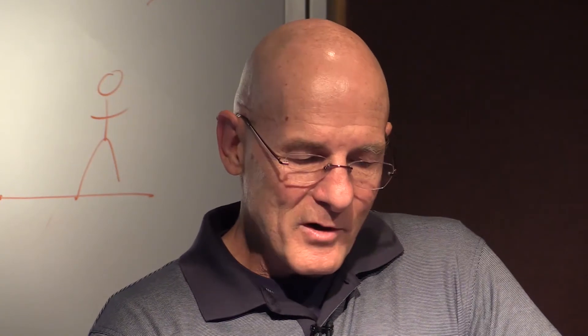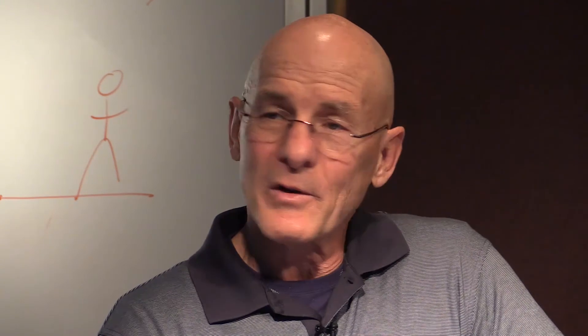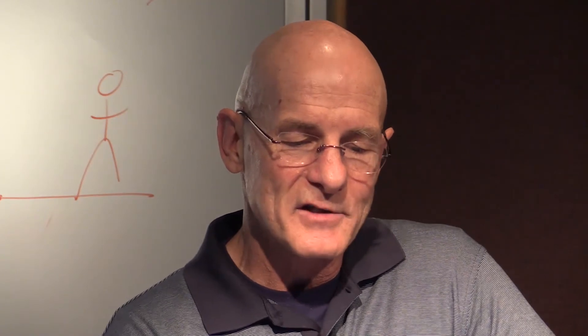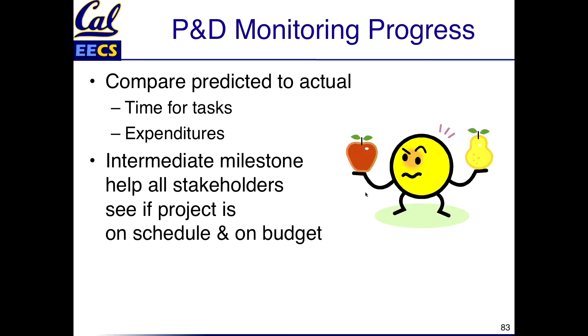Once you've made a PERT chart, what do you do while the project is going? You compare what you predicted to how long things are actually taking — tracking actual expenditures and time against your PERT chart. By sharing these intermediate milestones, everybody is aware of whether you're on budget or on schedule, both the people building it and the customers.